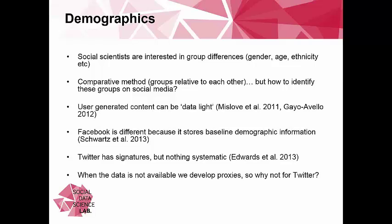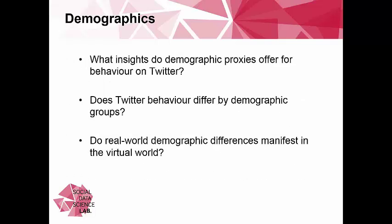We're really looking at how the real world is manifest in the virtual, but there's a lot in between about identity play, about deception, and sometimes just about people genuinely putting a typo. So if someone says in their profile that they're 300 years old and they meant to put 30, that's not always deception — sometimes genuine mistakes. The general research question is: what insights do demographic proxies offer about behaviour on Twitter? And to test that, if we think we can identify demographic characteristics of individual users, we would expect to see differing patterns of behaviour.